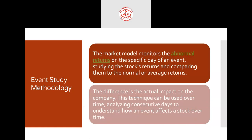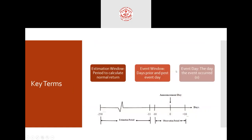For a stock — let's take Reliance as an example — there is a normal return, which is the usual return that happens if nothing special happens. Any return over and above, or below, this normal return is called an abnormal return. That is what we check using event study methodology. The difference between the actual return and the normal return is what we call the abnormal return.